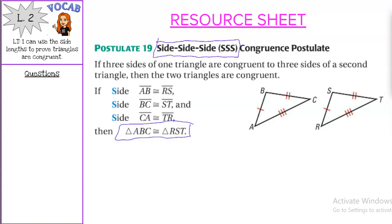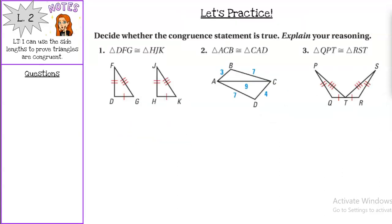Therefore the two triangles are congruent. So we are going to use this postulate in our work today. First off, decide whether the congruence statement is true. Explain your reasoning. We have triangle DFG is congruent to triangle HJK.